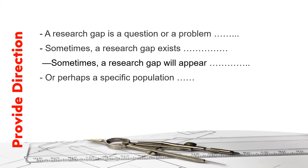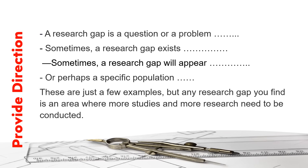Or perhaps a specific population has not been well studied. For example, there are plenty of studies on teenagers and video games, but not enough studies on toddlers and video games. Any research gap you find is an area where more studies and more research need to be conducted.